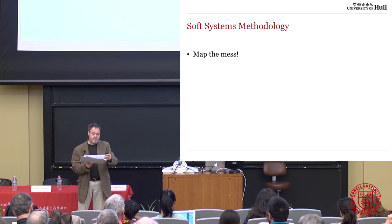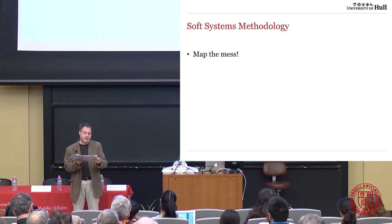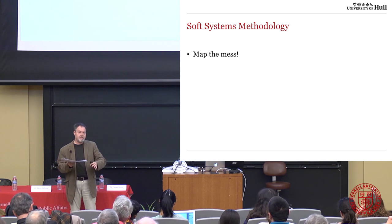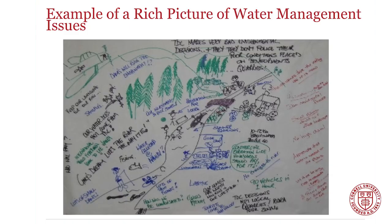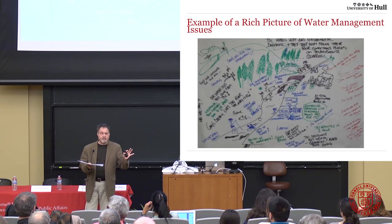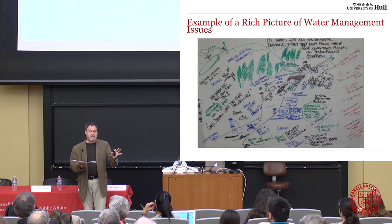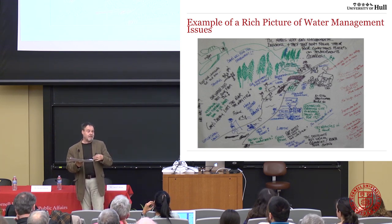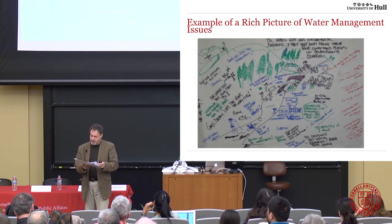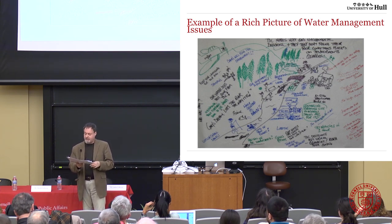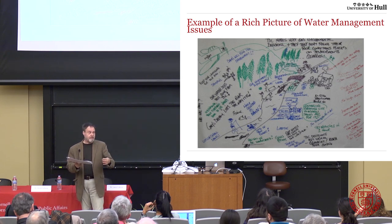Mapping the mess means capturing information from stakeholders about the whole messy situation, including disagreements. This is an example of a rich picture — the way to map the mess — from a feasibility study for building a water storage dam to address drought in New Zealand. You don't have to understand the diagram; what matters is that the people who drew it understand it and can use it to reflect back on. It's a participative exercise that combines everybody's understandings and also represents disagreements.